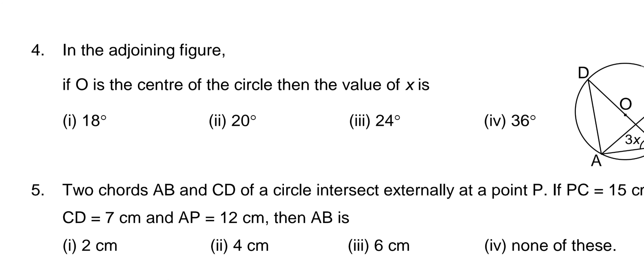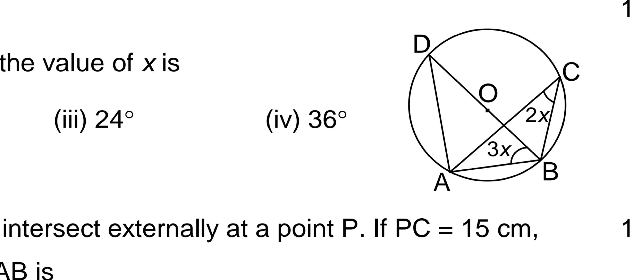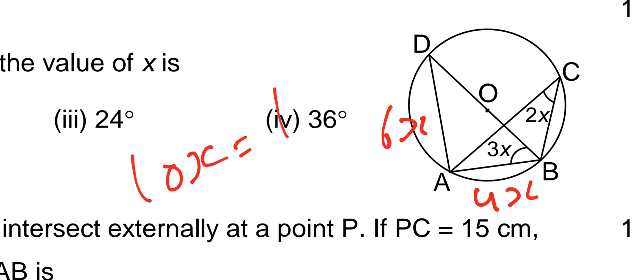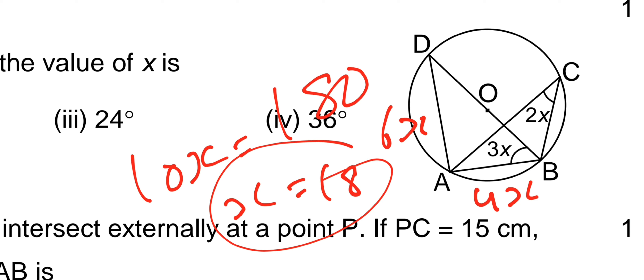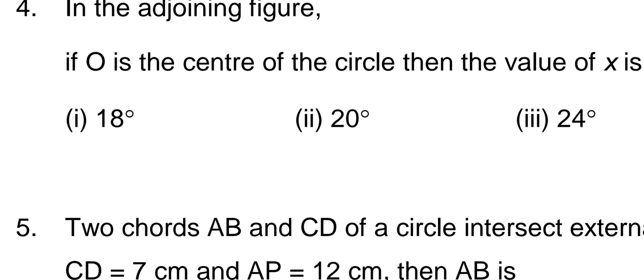Question number 4: in the adjoining figure, O is the center of a circle, find the value of x. The inscribed angle is 3x, so arc AD becomes 6x. The other inscribed angle is 2x, so arc AB becomes 4x. Since BD is a diameter (semicircle), 6x + 4x = 10x = 180, so x = 18. The first option, x = 18, is correct.